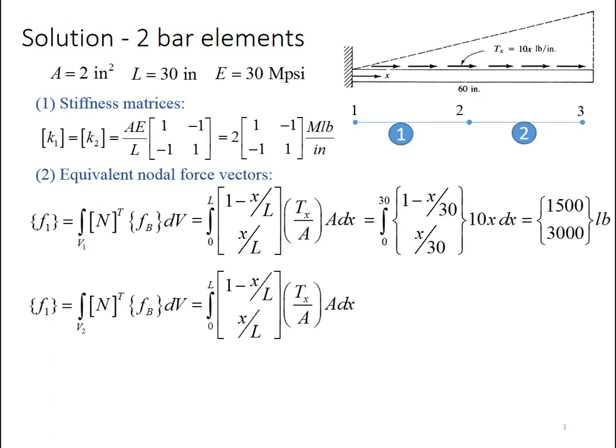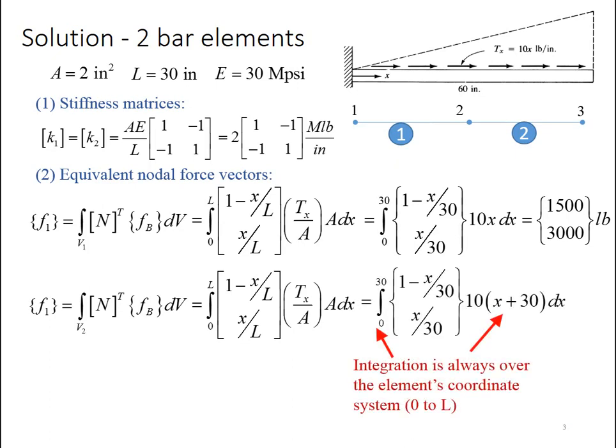In this case, everything's the same until I want to plug in lengths. So here it's critical to note that you're always going to integrate over the element coordinate system, which always starts at 0 and goes to L for a bar element. So I'm integrating from 0 to 30. However, my tx expression is based on a different definition of x, so I have to modify that. x is now x plus 30 in order for me to have the right value for that surface traction being applied here. So then I evaluate that integral and I get 6,000 at node 2 and 7,500 at node 3.